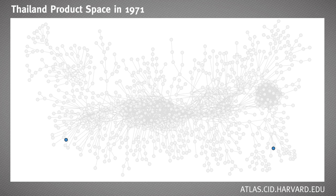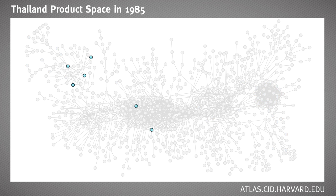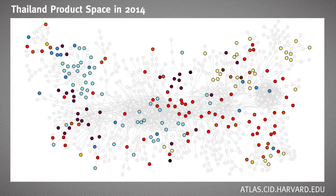Then suddenly they started to get into the garment cluster — a couple of monkeys moved in and over time it took over the whole garment cluster. Then a monkey jumped over to the electronics cluster, and over time they took over the whole electronics cluster. Now they're moving into the machinery cluster at the center, and Thailand is today a major exporter of cars and trucks. The history of Thailand is the history of the massive invasion of its monkeys into the whole product space.